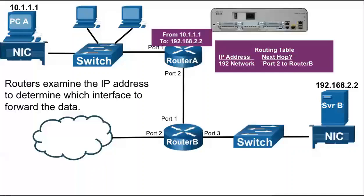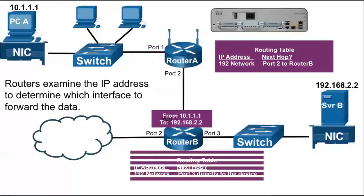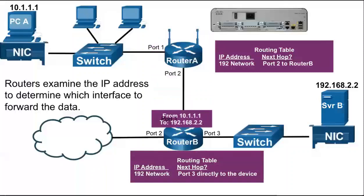Routers have routing tables, which tell them where to forward packets. If the IP address of the destination device — Server B in this example — is not on a network directly connected to this router, it will forward the packet to another router.